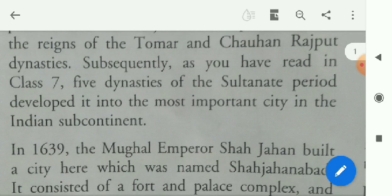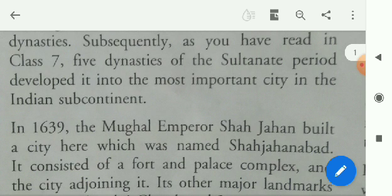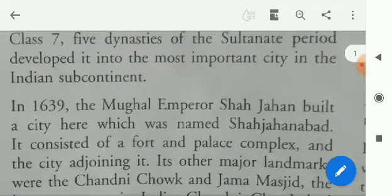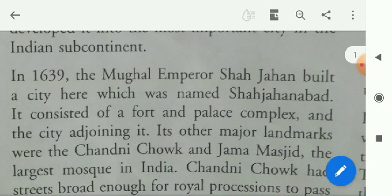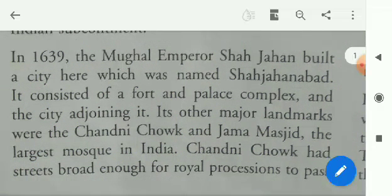Subsequently, as you have read in class 7, five dynasties of the Sultanate period developed Delhi into the most important city in the Indian subcontinent. Delhi has been the most prominent center for rulers. During the Sultanate period, the five dynasties ruled over Delhi and kept it as the main center of their rule.